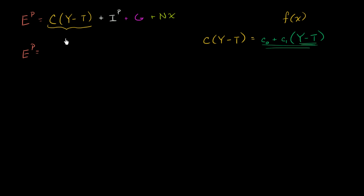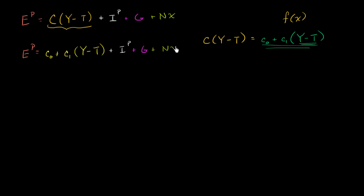So we can substitute this function expression with the stuff in green. Aggregate planned expenditure is equal to our consumption function, so it's equal to autonomous consumption plus the marginal propensity to consume times disposable income — which is aggregate income minus taxes — and then of course we have the other terms: plus planned investment, plus government spending, plus net exports.